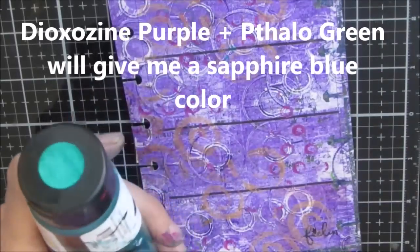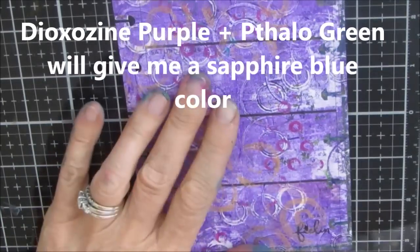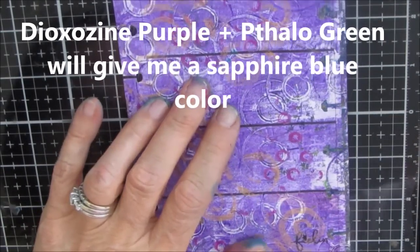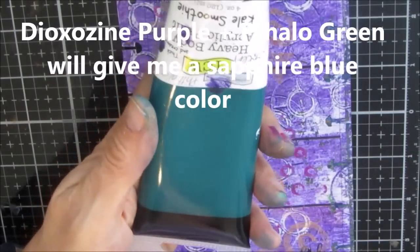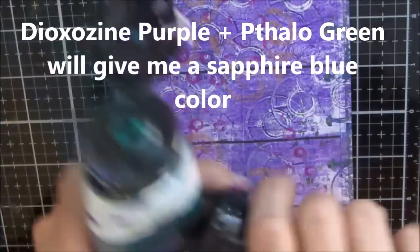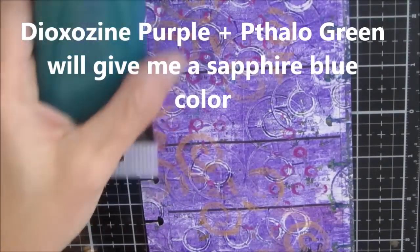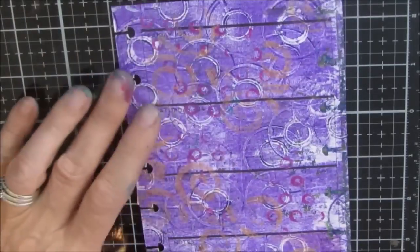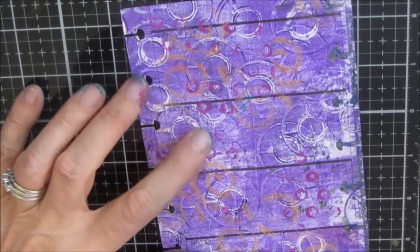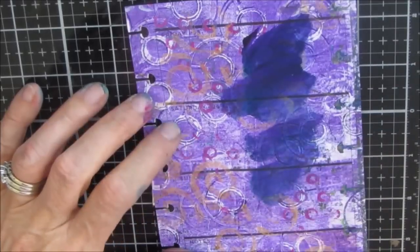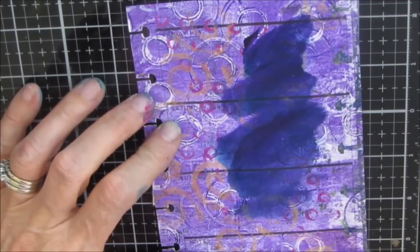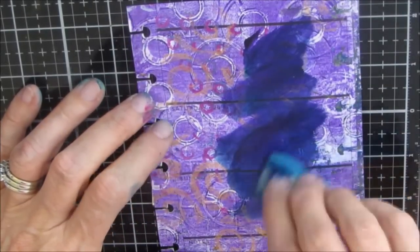So on the gel print that I don't like that's on my page from my happy planner, I'm mixing dioxazine purple and phthalo green and they give you a navy or a sapphire blue color.